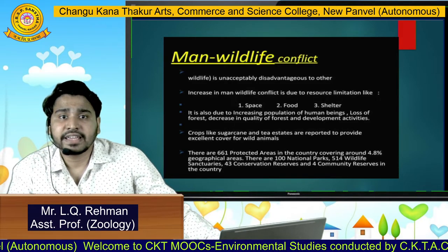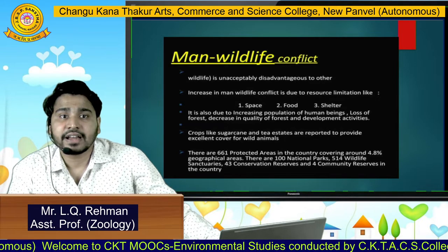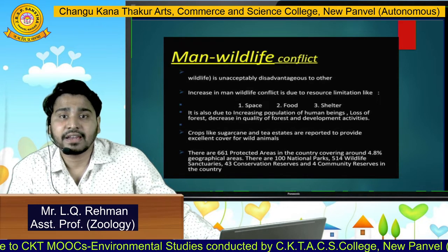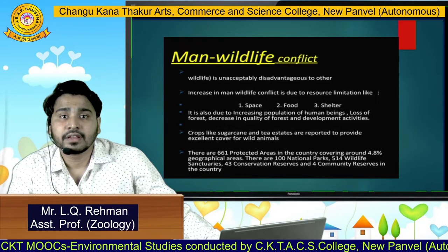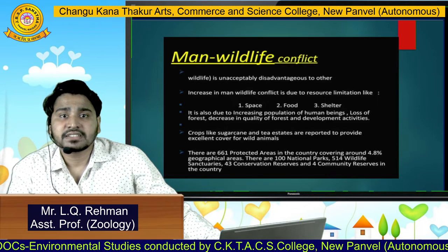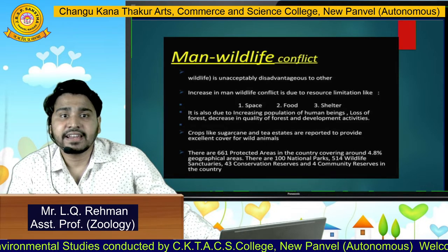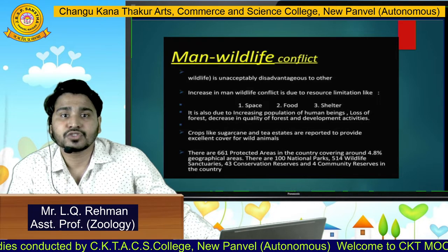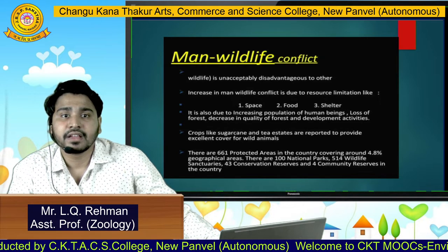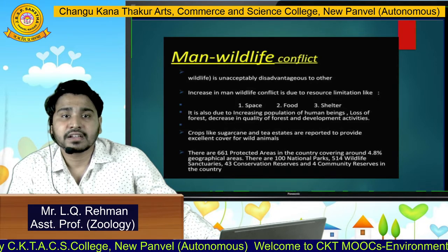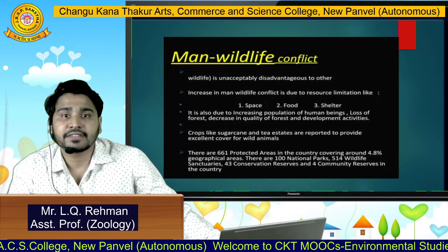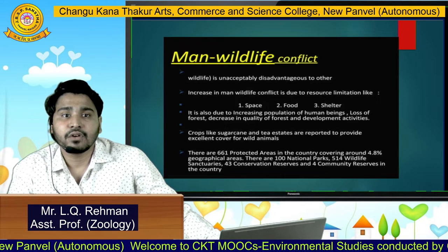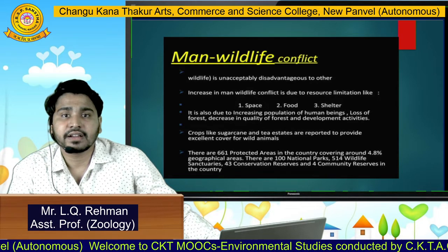Crops like sugarcane and tea estates are reported to provide excellent covers for wild animals. There are about 661 protected areas in the country covering about 4.8% of geographical areas. There are 100 national parks, 315 wildlife sanctuaries, 43 conservation reserves, and 4 community reserves in the country.